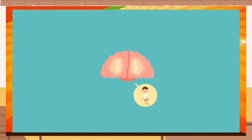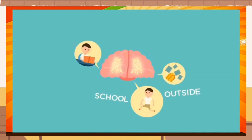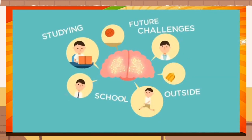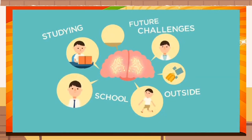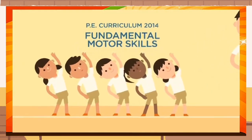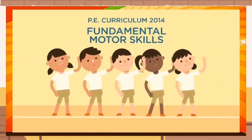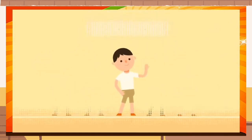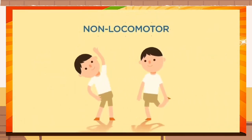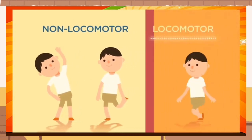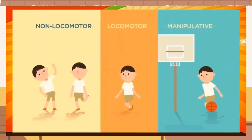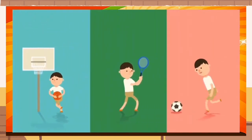Remember, the brain is involved in everything they do in school and outside, whether it's studying or tackling future challenges as they grow up. With the help of the revised P.E. curriculum, our P.E. curriculum begins in P.1 with non-locomotor skills. It also teaches John locomotor skills, manipulative skills, and combining skills with the application of movement concepts.